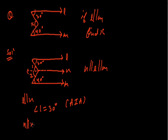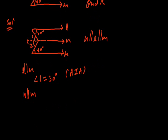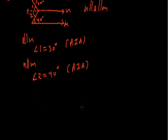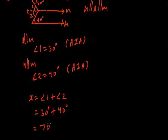Since the auxiliary line is also parallel to M, angle 2 equals 40 degrees because they again form alternate interior angles. From the figure, X equals angle 1 plus angle 2, which is 30 plus 40, so X equals 70 degrees.